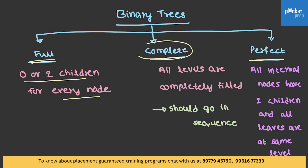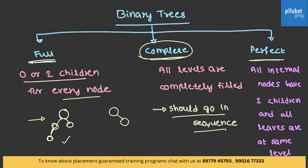Now we have complete binary trees. In the case of a complete binary tree, we should fill nodes in sequence. You take a node, you have to fill the nodes in sequence — start with the root, fill the left, fill the right, then fill the left of the next. This can be a complete binary tree. If you start with the root and fill right without any left, it cannot come under the category of complete. So it should be in sequence.